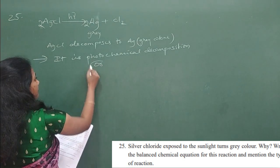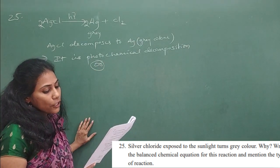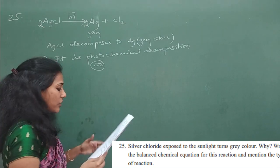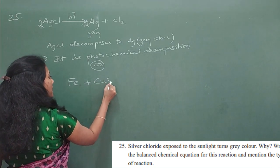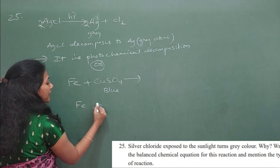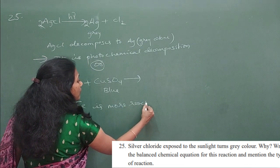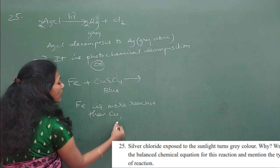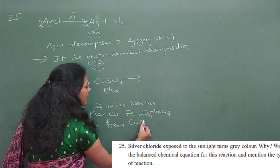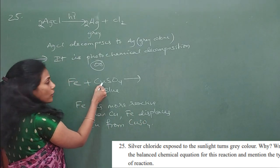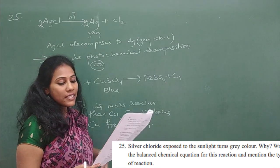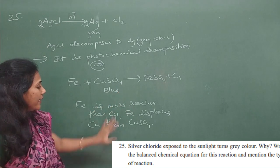The OR question: 'Why does the color of copper sulfate solution change when an iron nail is dipped into it? Write the balanced chemical equation.' Copper sulfate is a blue-colored solution. Since iron is more reactive than copper, iron displaces copper from copper sulfate solution. The products are FeSO4 and copper. This is a balanced displacement reaction, and this is the reason the color changes.